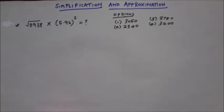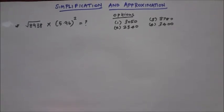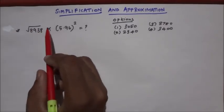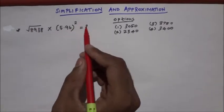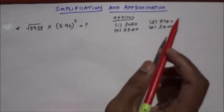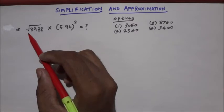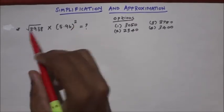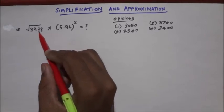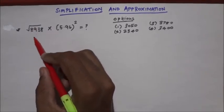Simplification and Approximation. Square root of 8,938 times 5.96 squared. Square root of 8,938, square root of 8 and 8.